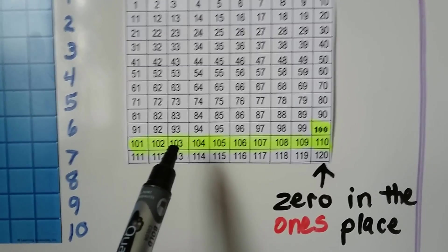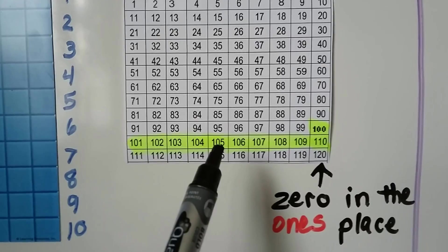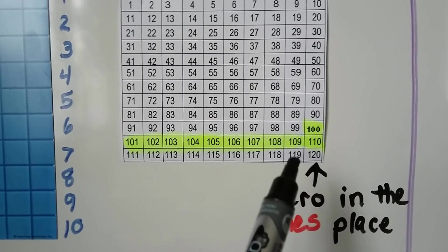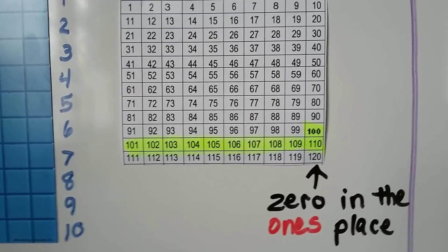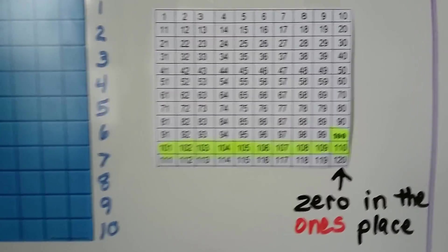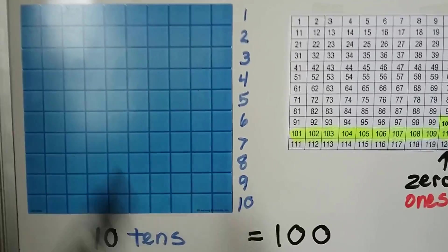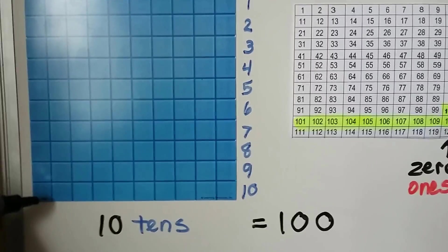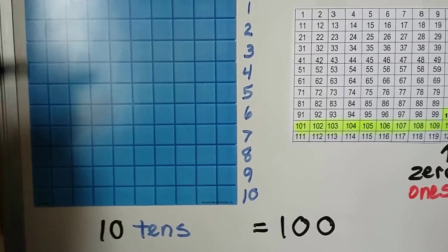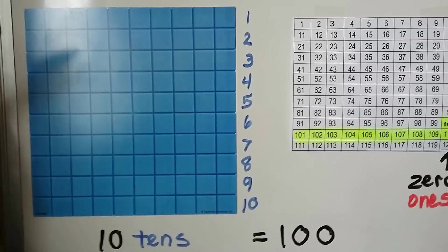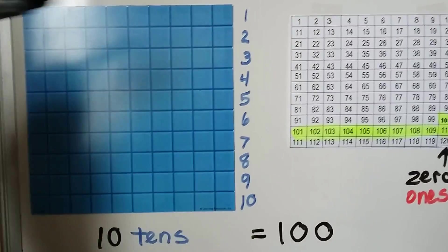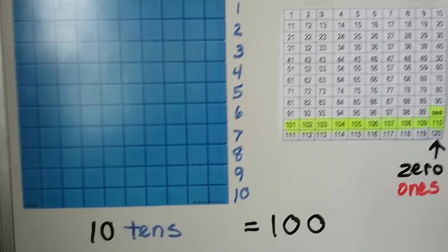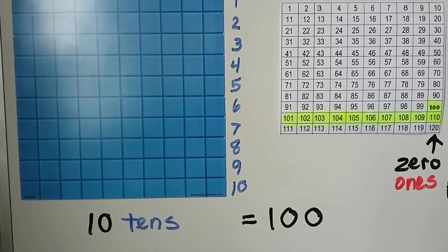Then the next number is 101, 102, 103, 104, 105, 106, 107, 108, 109, then 110. This is ten tens. We could say this is ten coming down in each column. We could also say it's ten going across in each row. But it's ten tens, and ten tens make 100.